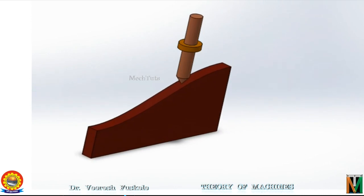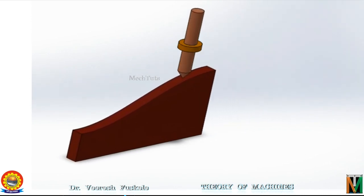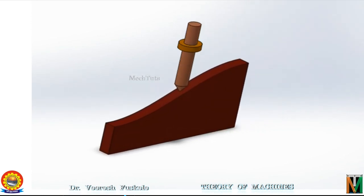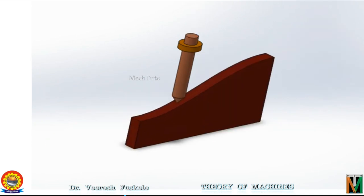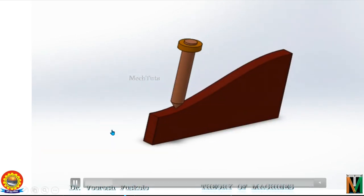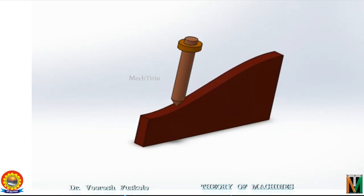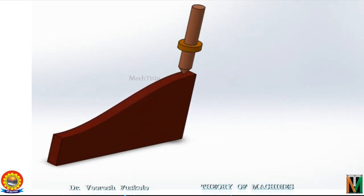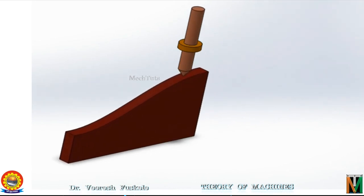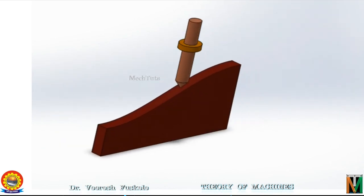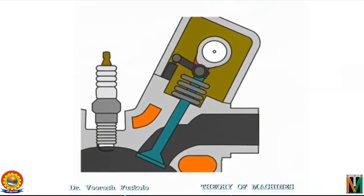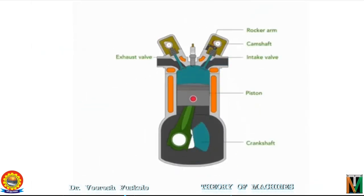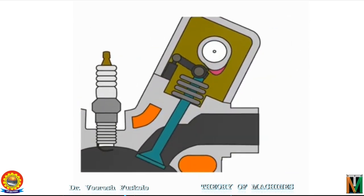Higher pair means the two links are connected either along a line or at a point, as seen in this case. One such higher pair mechanism is what we call cam and follower system. In this cam and follower mechanism, the input link is the cam and the follower is the output link. As we have already seen, cam and follower mechanism is nothing but an exact function generator. By linkages, we had approximate function generators, but by using this cam and follower mechanism, we can have exact function generation. Any complicated coordinated movement between the output and input link is possible by using cam and follower mechanism.